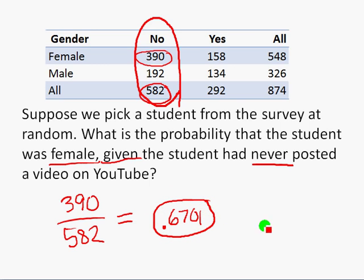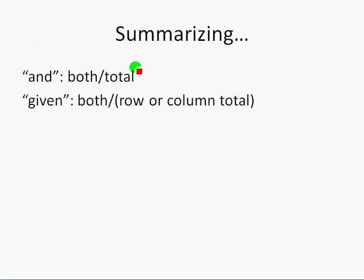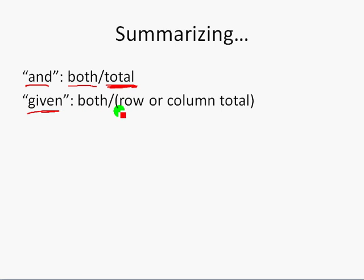In summary, for more complicated probability: if we have the word AND, we look at where two conditions intersect, out of the total of all people in the survey. If we use the word GIVEN, we look at just a row or column for our denominator, and find people who are in both situations — like both male and never posted.